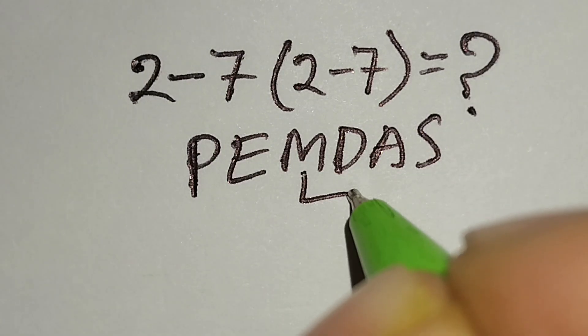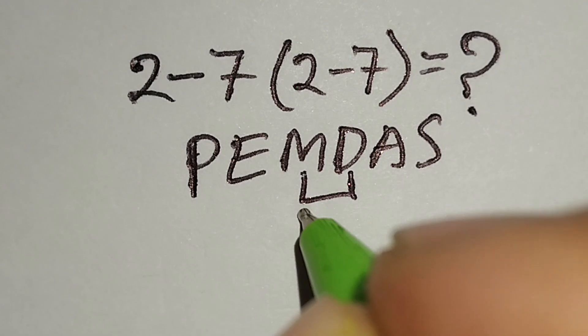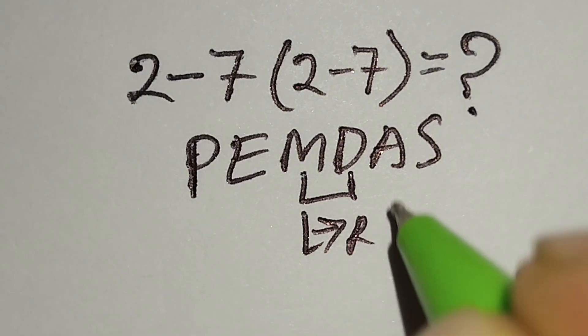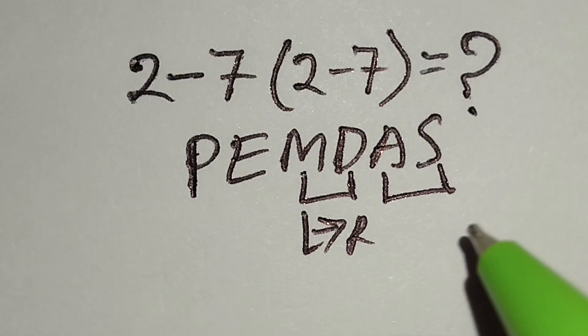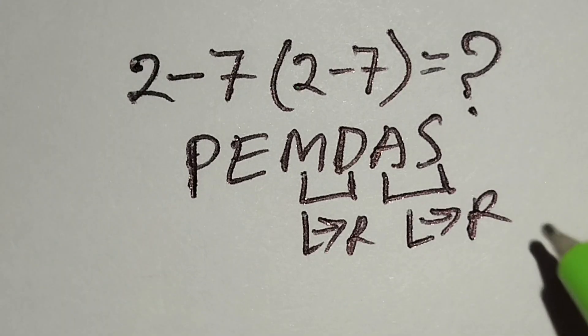Remember, multiplication and division have same priority. For this we have to work left to right. And addition and subtraction have same priority. For this we have to work left to right also.